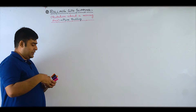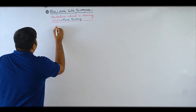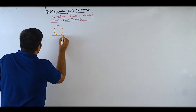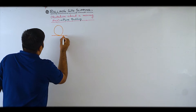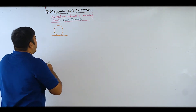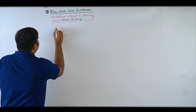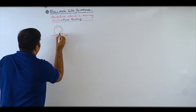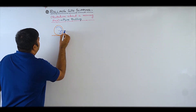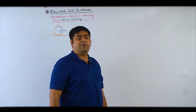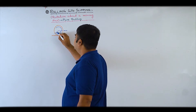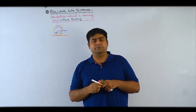Pure rolling ka case pehle samajhte hain. Abhi tak hamare paas koi bhi translational motion nahi ho raha tha - body ka keval aur keval rotational motion ho raha tha. Mere paas ek sphere hai aur ground hai. Ye jo center of mass ke about omega se rotate kar raha hai, aur saath hi saath center of mass khud bhi v direction mein move kar raha hai. Ye jo radius hai, that radius is equals to R.